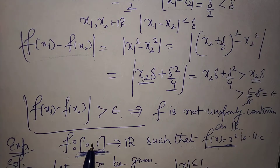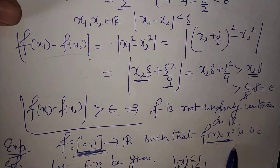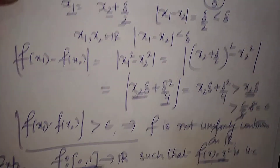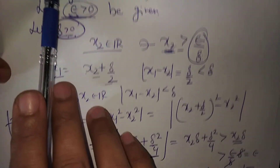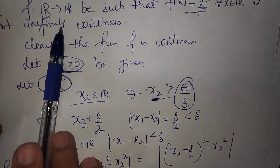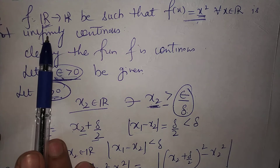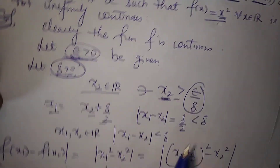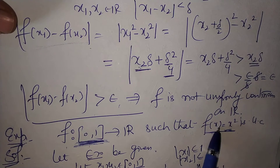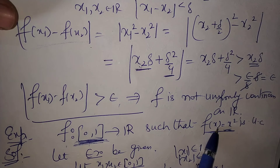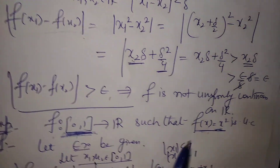You can see that uniform continuity depends only on the function and the domain. The function f(x) = x² on the whole real line is not uniformly continuous, but the same function restricted to the closed interval [0,1] is uniformly continuous.